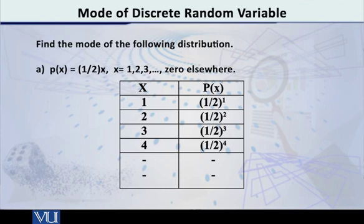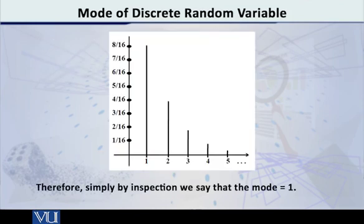For example, when X is equal to 100, what will be P(X) equal to? Half raised to 100. So just think about it. 1 over 2 raised to 100. Obviously, that's a very, very small number.